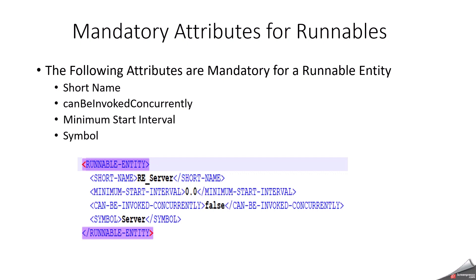It is allowed to invoke the same runnable entity several times concurrently in different OS tasks, meaning different AUTOSAR OS tasks. However, there is no bound on the number of concurrent invocations of the runnable entity. We can discuss canBeInvokedConcurrently in more depth in a separate video. The minimum start interval specifies the minimum time between two consecutive executions of the same runnable entity, guaranteed by RTE — the time interval is specified in seconds. Symbol name is just like a function name — whatever function you are going to write in C, the same name you have to mention as the symbol.